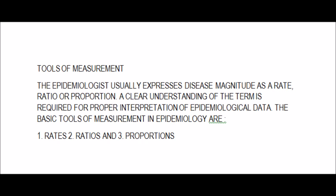Then let us talk about tools of measurement. The epidemiologist usually expresses disease magnitude as rates, ratios, or proportions. A clear understanding of these terms is required for the proper interpretation of epidemiological data. The basic tools of measurement in epidemiology are: Number 1, Rate; Number 2, Ratio; and Number 3, Proportion.